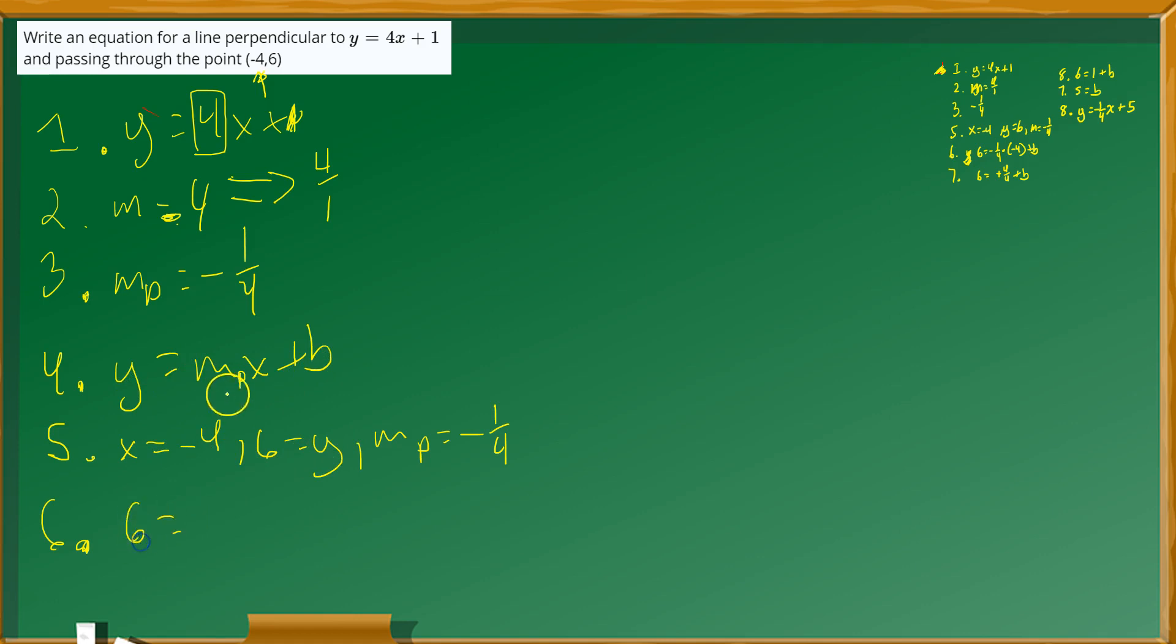So you're using y equals mx plus b. Replace y with 6. For m sub p here, plug in that negative 1 quarter. You multiply by the value of x, that's negative 4, and then you add the b. You need to find the value of b.